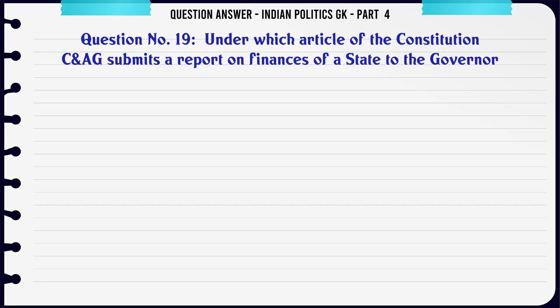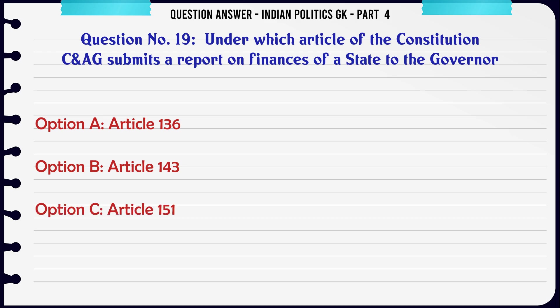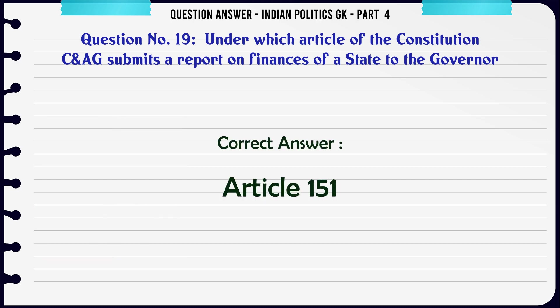Under which article of the Constitution does the CAG submit a report on finances of a state to the Governor? A. Article 136. B. Article 143. C. Article 151. D. Article 159. The correct answer is Article 151.